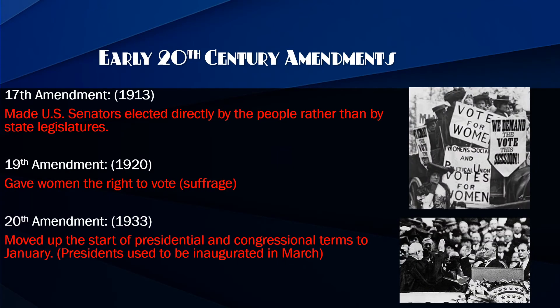Jumping ahead to the 20th century — in 1913, the 17th Amendment changed how senators are elected. It used to be state legislatures that voted for senators, not the people directly. Now we vote for senators. The 19th Amendment gave women the right to vote. That was a long fight, and it's been 100 years — there were supposed to be big celebrations but everything was canceled.